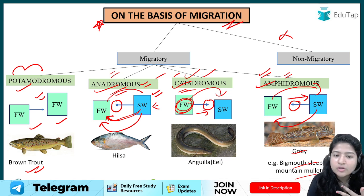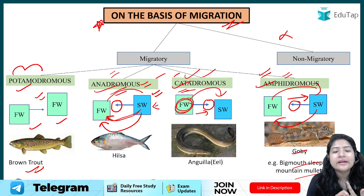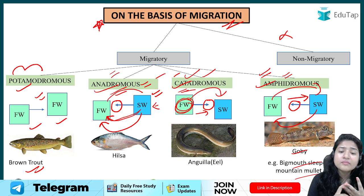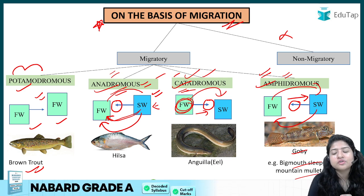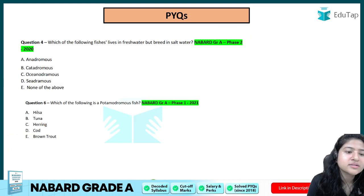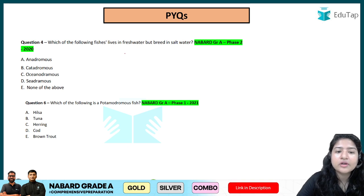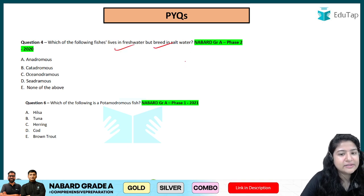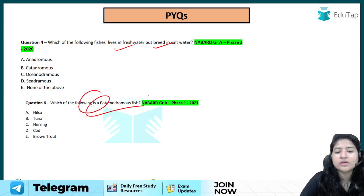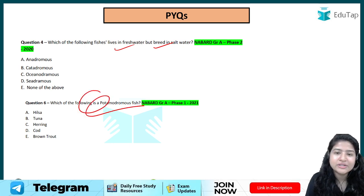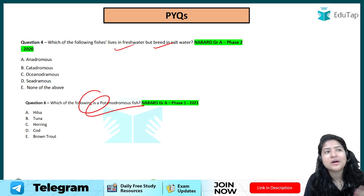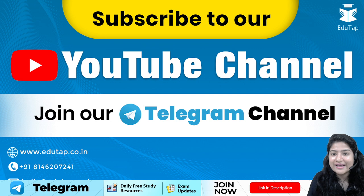To recap the migration-based classification: potamodromous — fresh water to fresh water, example brown trout; anadromous — sea water to fresh water for laying eggs, example salmon; catadromous — fresh water to sea water, example eel; amphidromous — moving between both without dying, example goby. Now try the practice questions: which fish lives in fresh water but breeds in salt water? Which is a potamodromous fish?